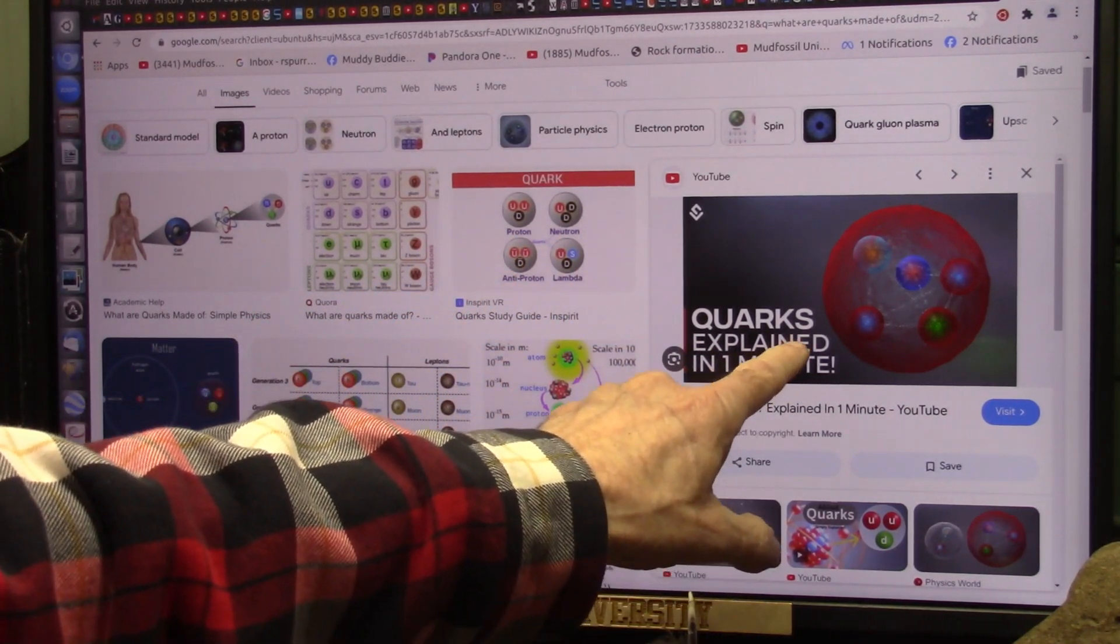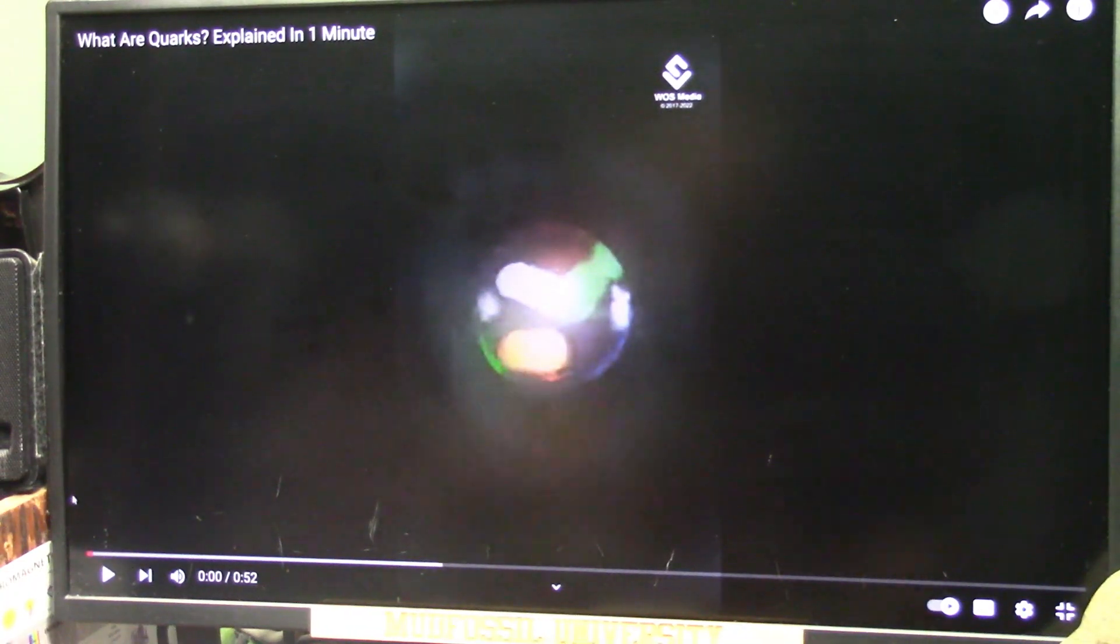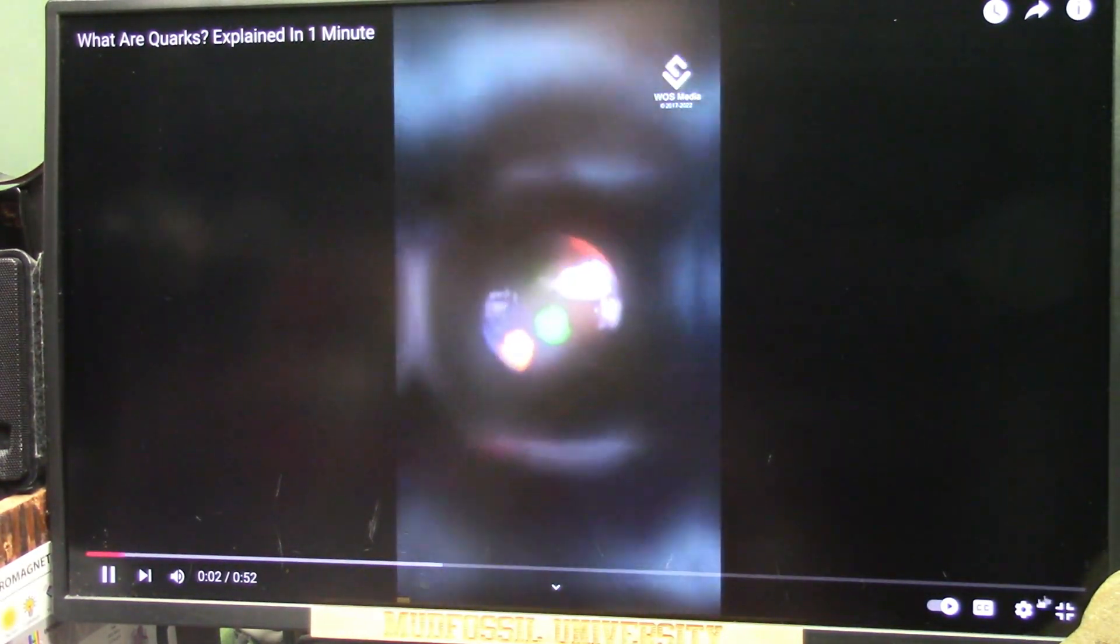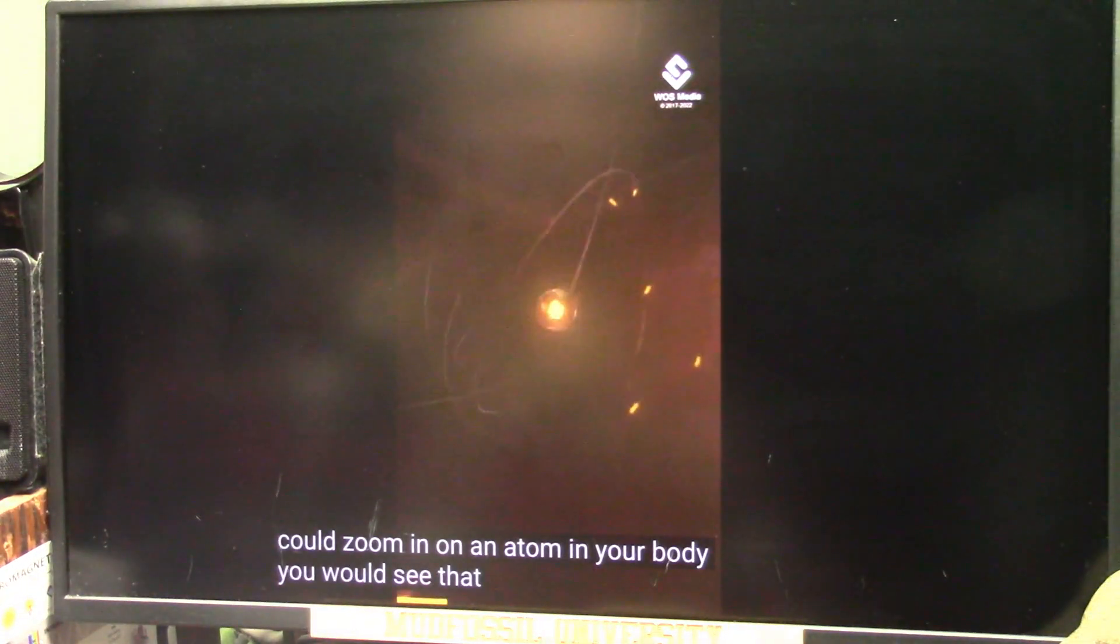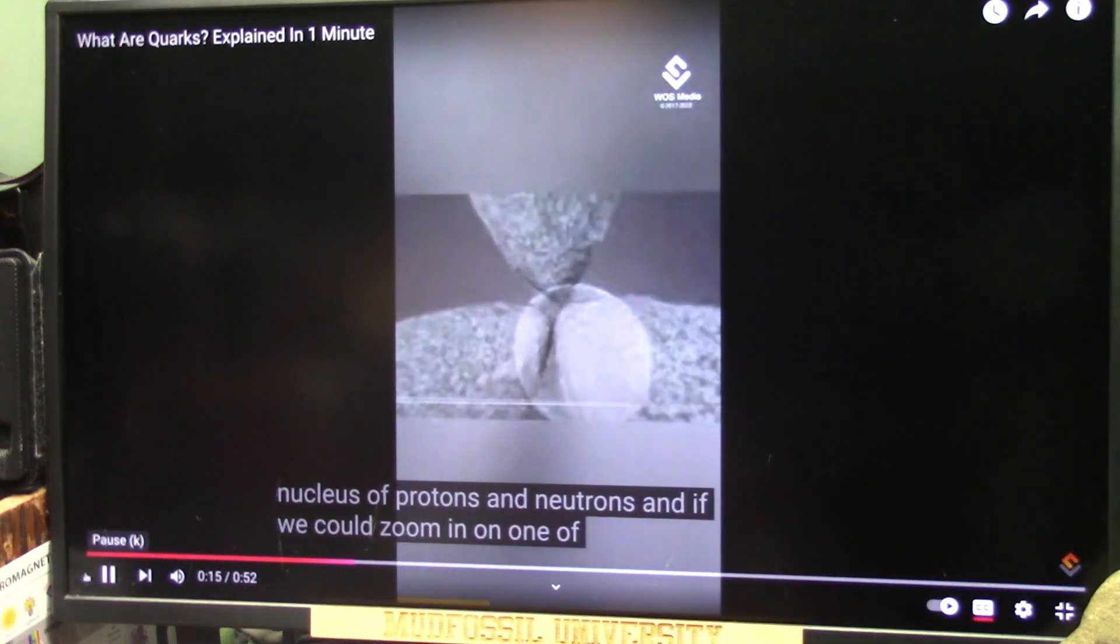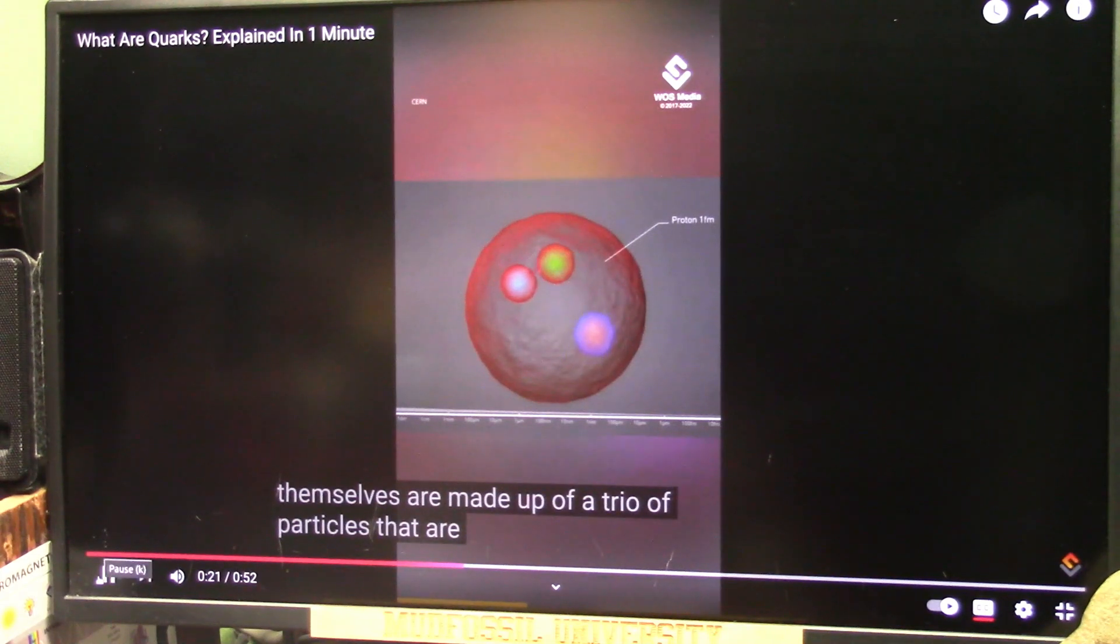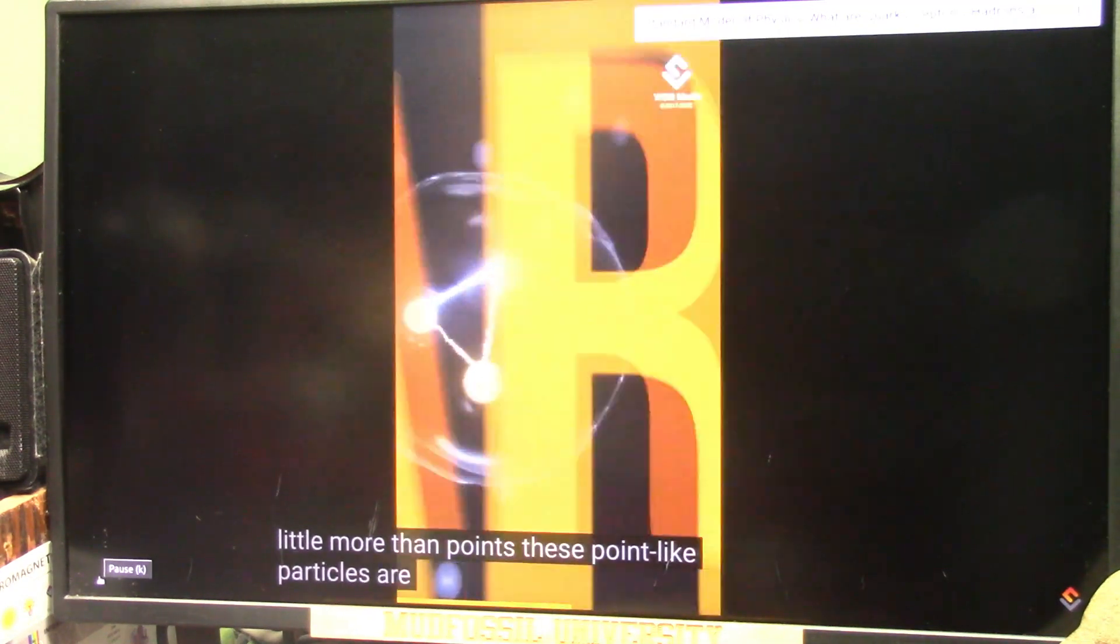This is just not right. Let's watch this. Quarks explained in one minute. Let's see if this makes sense. They're going to explain quarks in 52 seconds. What are quarks? Quarks are the ultimate building blocks of visible matter in the universe. If we could zoom in on an atom in your body, you would see that it consists of electrons swarming in orbits around a nucleus of protons and neutrons. And if we could zoom in on one of those protons or neutrons, we'd find that they themselves are made up of a trio of particles that are so small that they have almost no size at all and are little more than points. These point-like particles are the quarks.